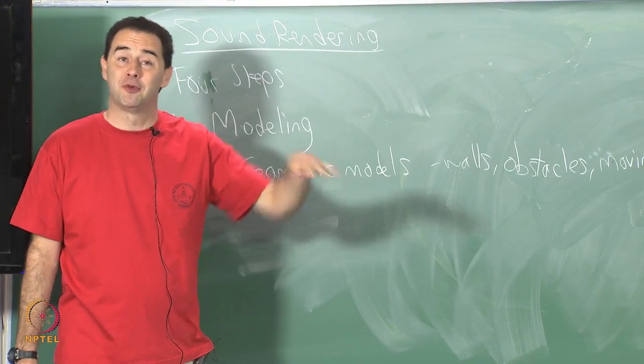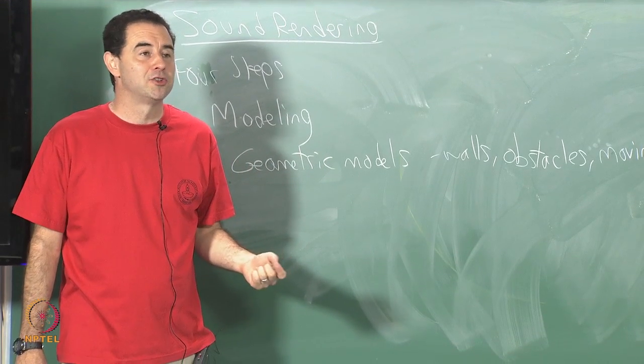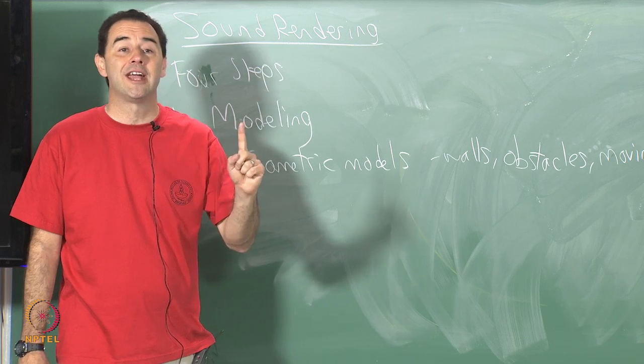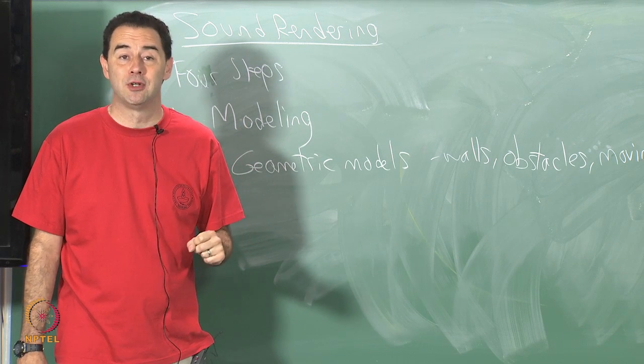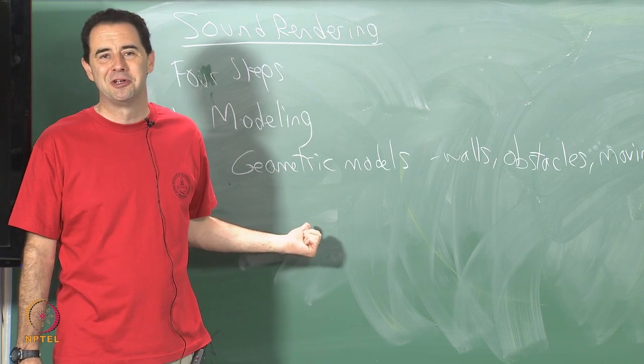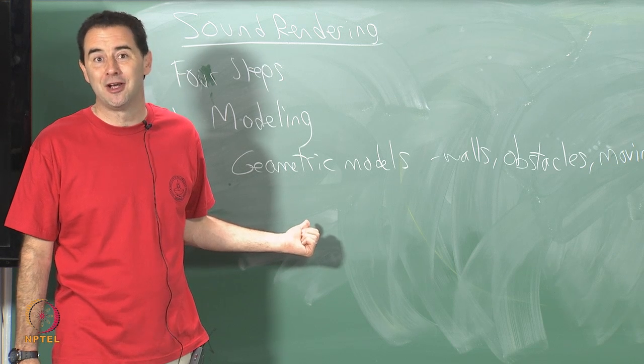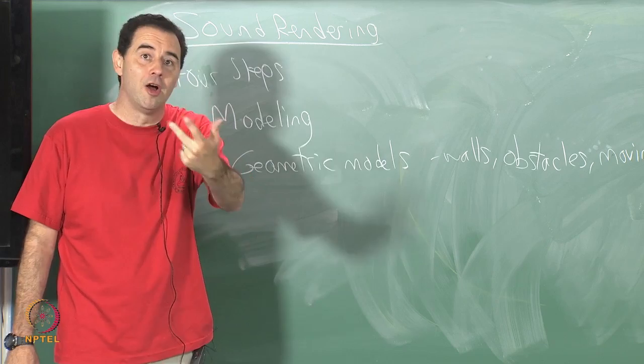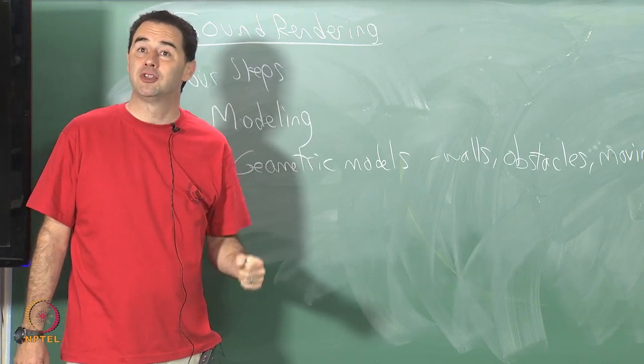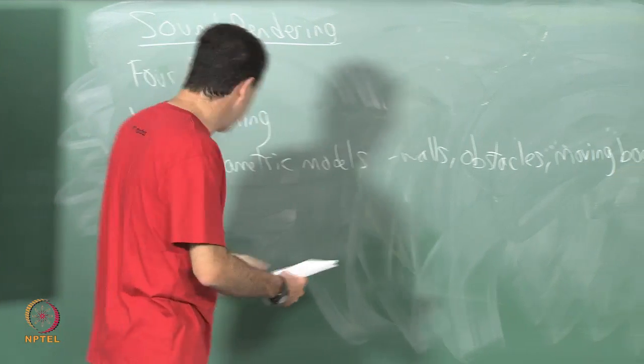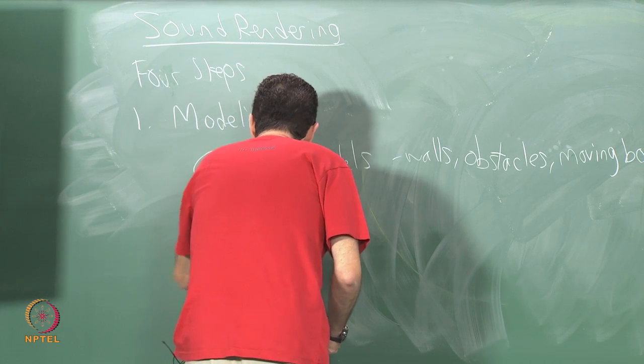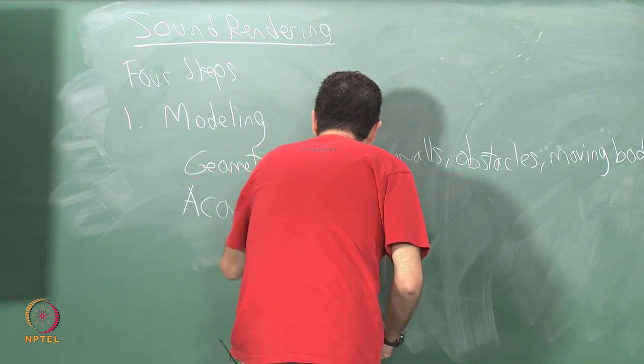When we were modeling objects for computer graphics, we were concerned about the material properties. We wanted to know how the light reflects off of the surface of our objects. What do we want in this case? We want to know how the sound reflects off or absorbs into the objects or maybe transmits through the objects or the diffraction that occurs. So, we have acoustic material properties.